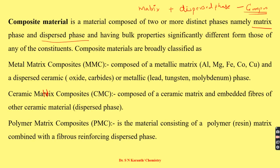The third category of composite is the polymer matrix composite (PMC), which is a material consisting of a polymer matrix combined with a fibrous reinforcing dispersed phase. Polymer matrix composites are produced by bonding a fiber material with a polymer resin matrix and curing under pressure or heat. The reinforcement can take different forms such as chopped fibers,